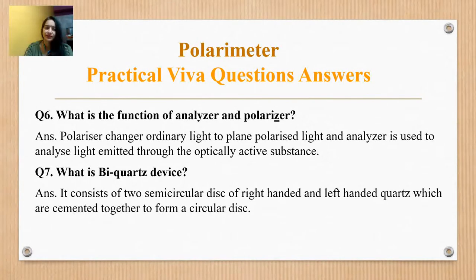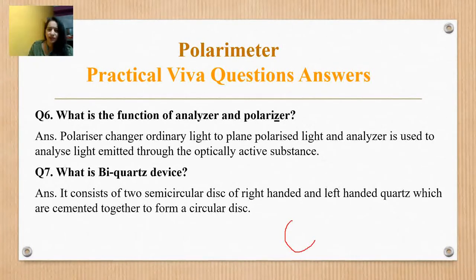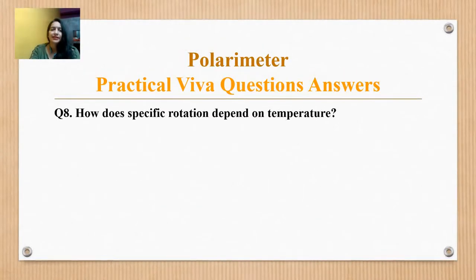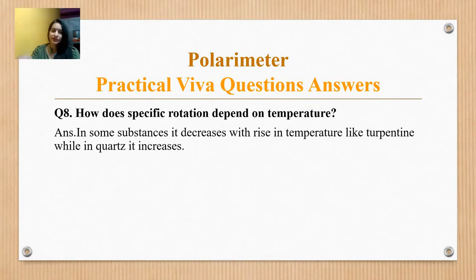What is the bi-quartz device? It consists of two semi-circular discs of right-handed and left-handed quartz which are cemented together to form a circular disc. For specific rotation, temperature can increase or decrease depending on the substance. For example, in turpentine, increasing temperature increases specific rotation, while in quartz, specific rotation also increases.